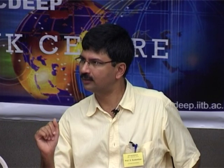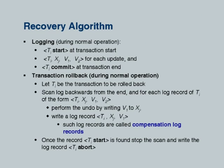Now let us present the actual recovery algorithm. Logging is as described, and transaction rollback is as described for a single transaction — going backwards through only the records of that transaction. For recovering from failure, there are two phases. In the redo phase, we replay updates of all transactions whether committed, aborted, or incomplete. We start from the last checkpoint record and set the variable undo_list to L, the list of active transactions at that checkpoint.